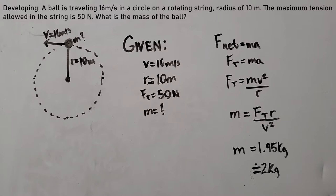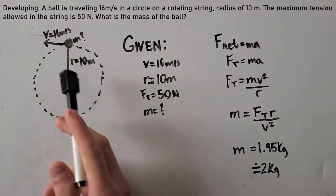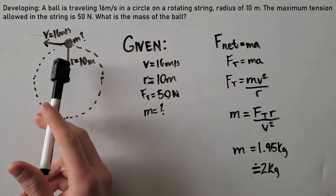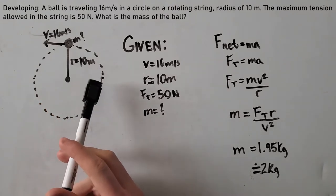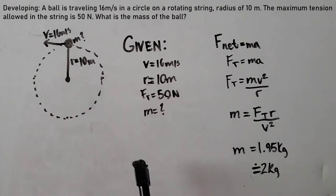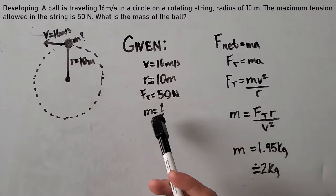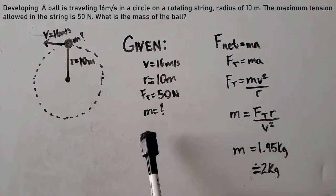Question 1 states that a ball is traveling at 16 meters per second in a circle on a rotating string, radius of 10 meters. The maximum tension allowed in the string is 50 newtons. What is the mass of the ball? Looking at our givens, we have velocity 16 meters per second, radius 10 meters, force of tension 50 newtons, and our mass is unknown.